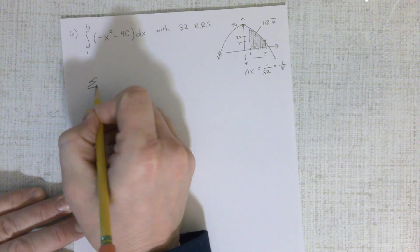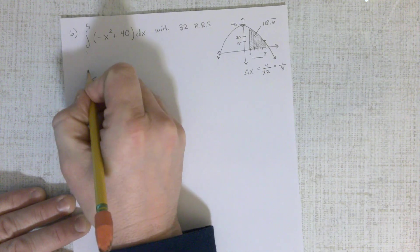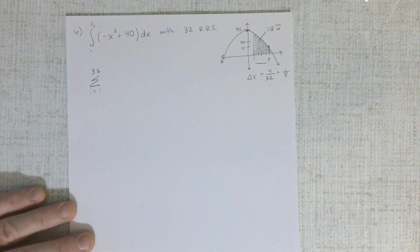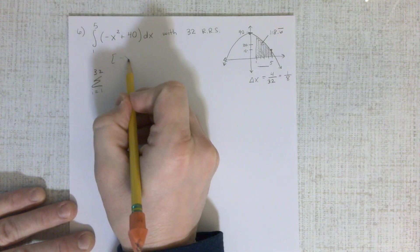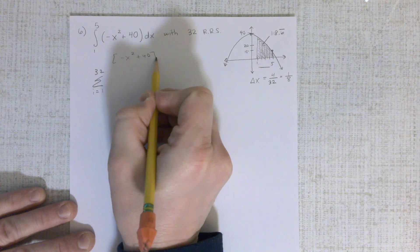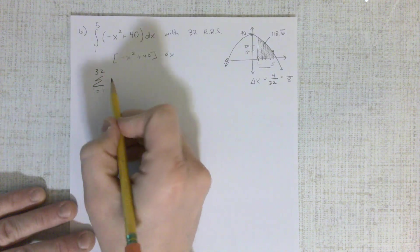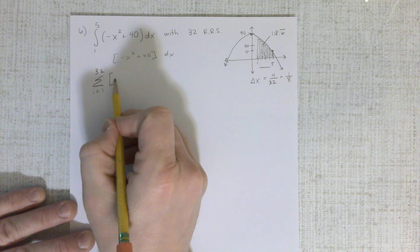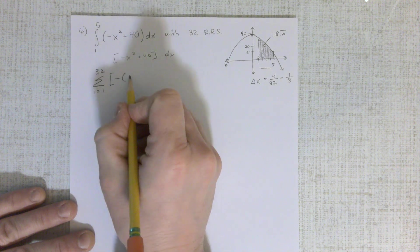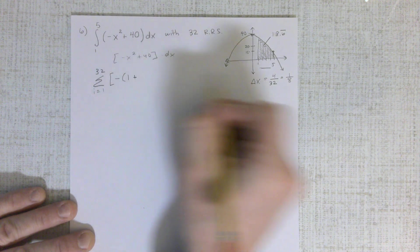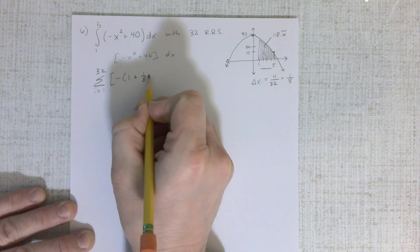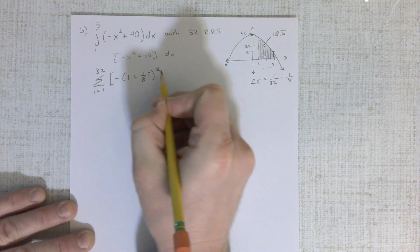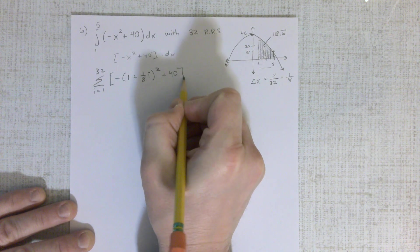All right, here we go. Let's go ahead and do the rectangles from 1 to 32. Again, I always put my function up here so I don't lose track of it. And I always put this in brackets, and here we go. It's minus, but what is my x? I'm starting at 1, and I'm adding on 1 eighth i each time, and that's being squared, and then I'm adding my 40.